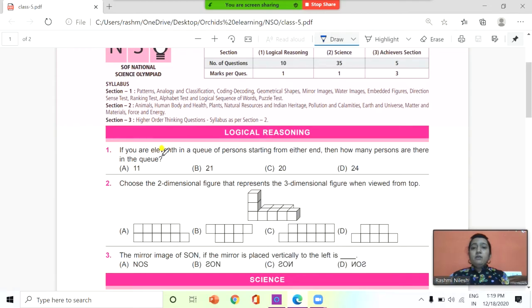First one: if you are 11th in a queue of person starting from either end, then how many persons are there in the queue? Your options are 11, 21, 20, and 24. Think about your answer very carefully. You can write your answers in comment sections or else you can take your notebook or any rough paper for the better practice. The correct answer is B.